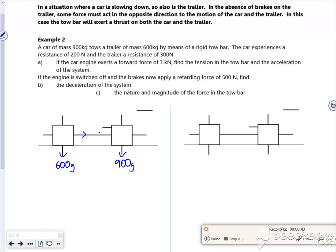The car experiences a resistive force of 200N and the trailer 300N. So I'm assuming going this way, we've got two normal resistances.